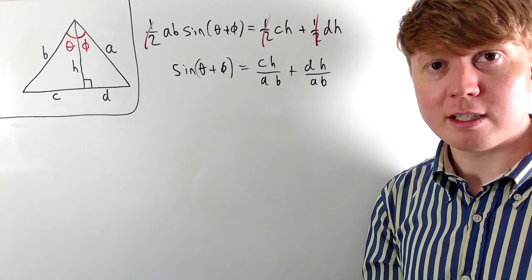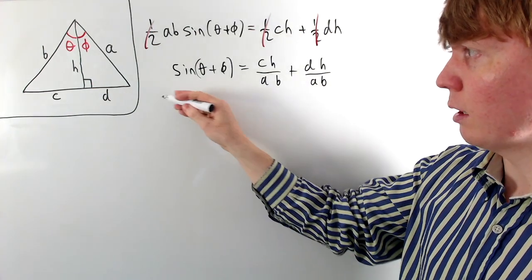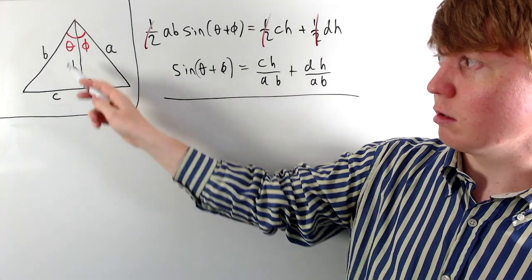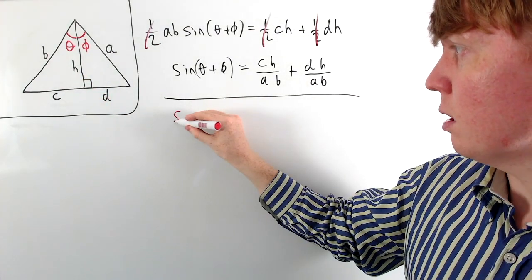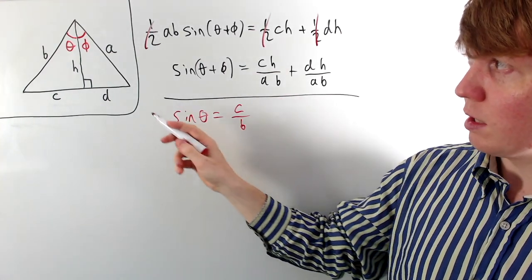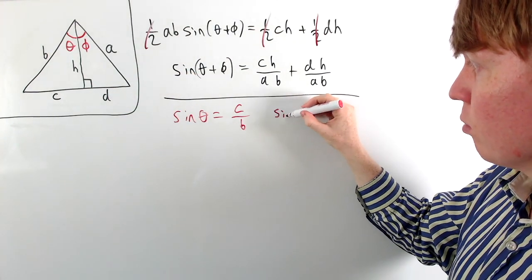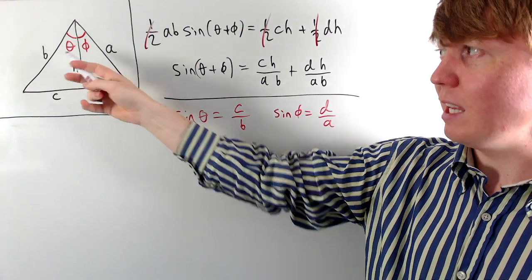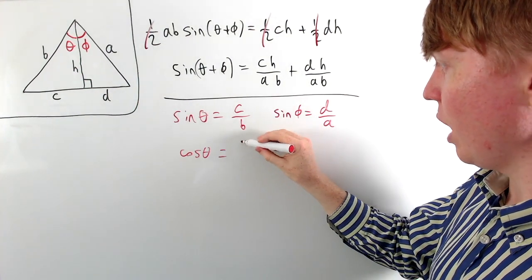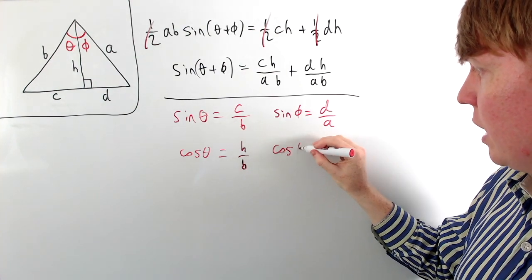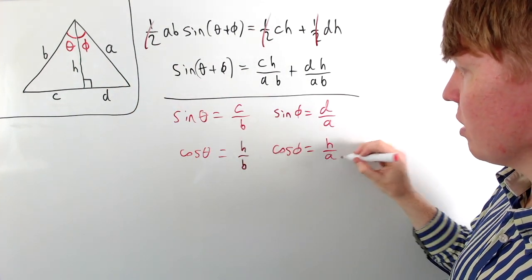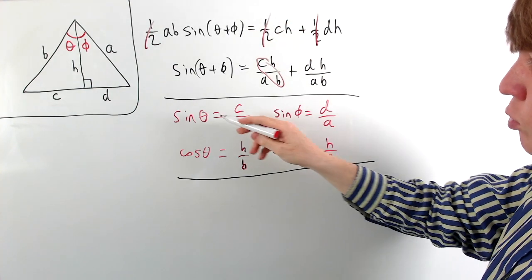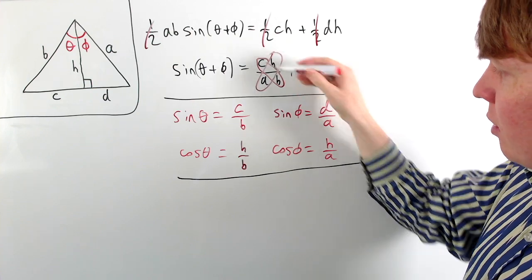Now we need to relate this to quantities like sine θ, cos θ, sine φ, and cos φ, which we can read off from each of the right-angled triangles. For sine θ, the opposite is c and the hypotenuse is b, so sine θ = c/b. Similarly, sine φ = d/a. For cos θ on the left-hand triangle, adjacent over hypotenuse gives h/b, so cos θ = h/b. And cos φ = h/a. We can now substitute these in to replace each of the letters.